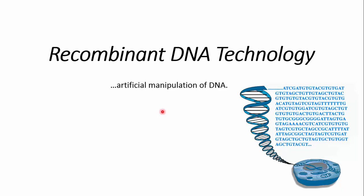Today we will discuss recombinant DNA technology. Recombinant DNA technology is one of the most recent advances in biotechnology, developed by two scientists, Boyer and Cohen, in 1973. It works by taking DNA from two different sources and combining that DNA into a single molecule. It only becomes useful when that artificially created DNA is reproduced inside the host cell, a process known as DNA cloning.